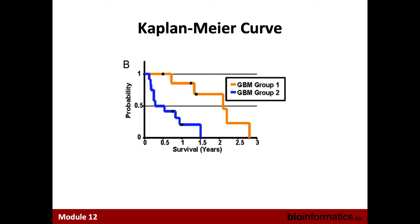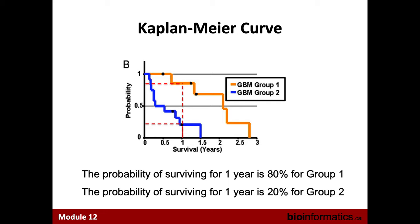In group one, 80% of that group is surviving for one year, but in group two only 20% survived — so the majority of that group is dying within the first year. They were able to find a gene expression pattern that really differentiated the prognosis of cancer in these patients. One really nice quality of survival analysis is that you can include information from incomplete observations — if you don't know when an event happened for someone, you can still include their information because you know no event happened up to a certain point.